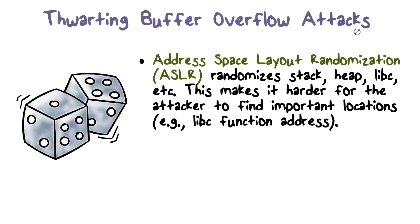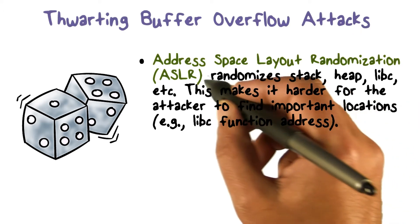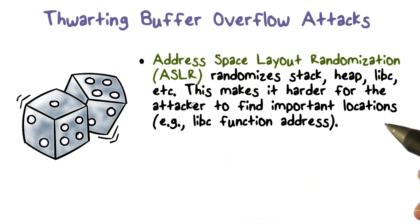The first one, which many operating systems use, is called Address Space Layout Randomization — ASLR. In an address space, someplace stack is allocated, the stack starts at a certain place, somewhere the library code goes, another place where the heap goes and so on. What if we randomize the places where these areas of memory start?